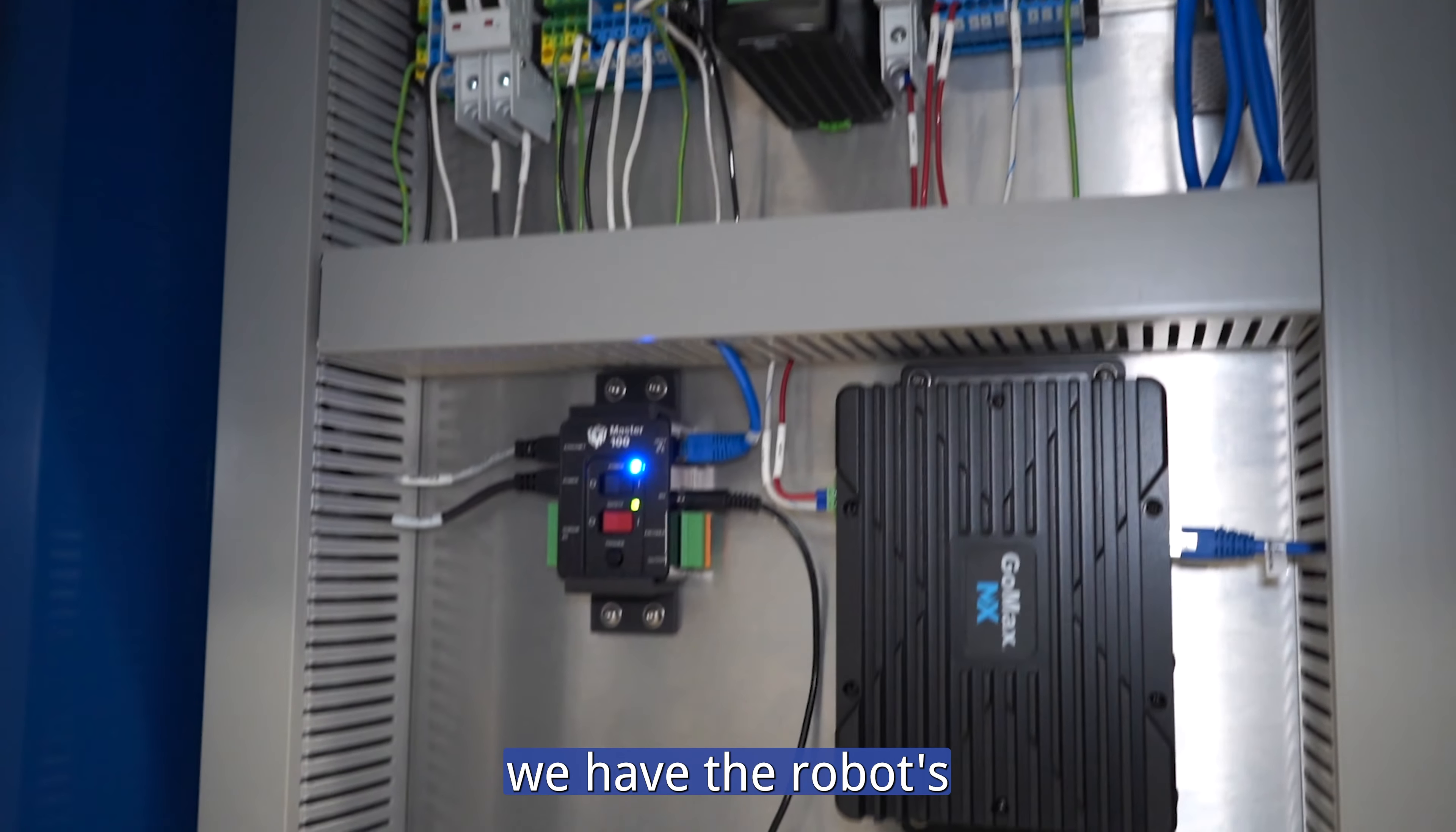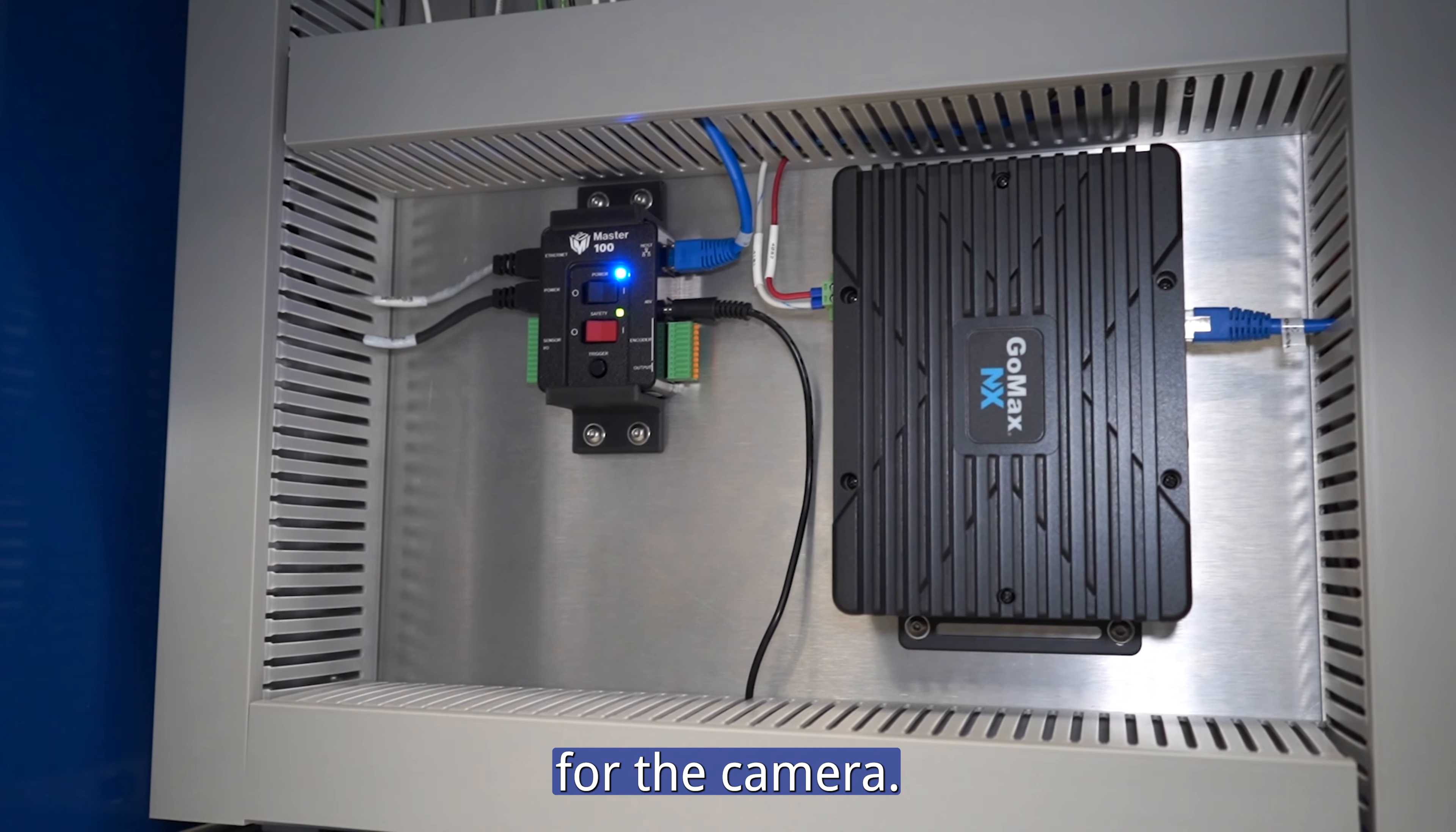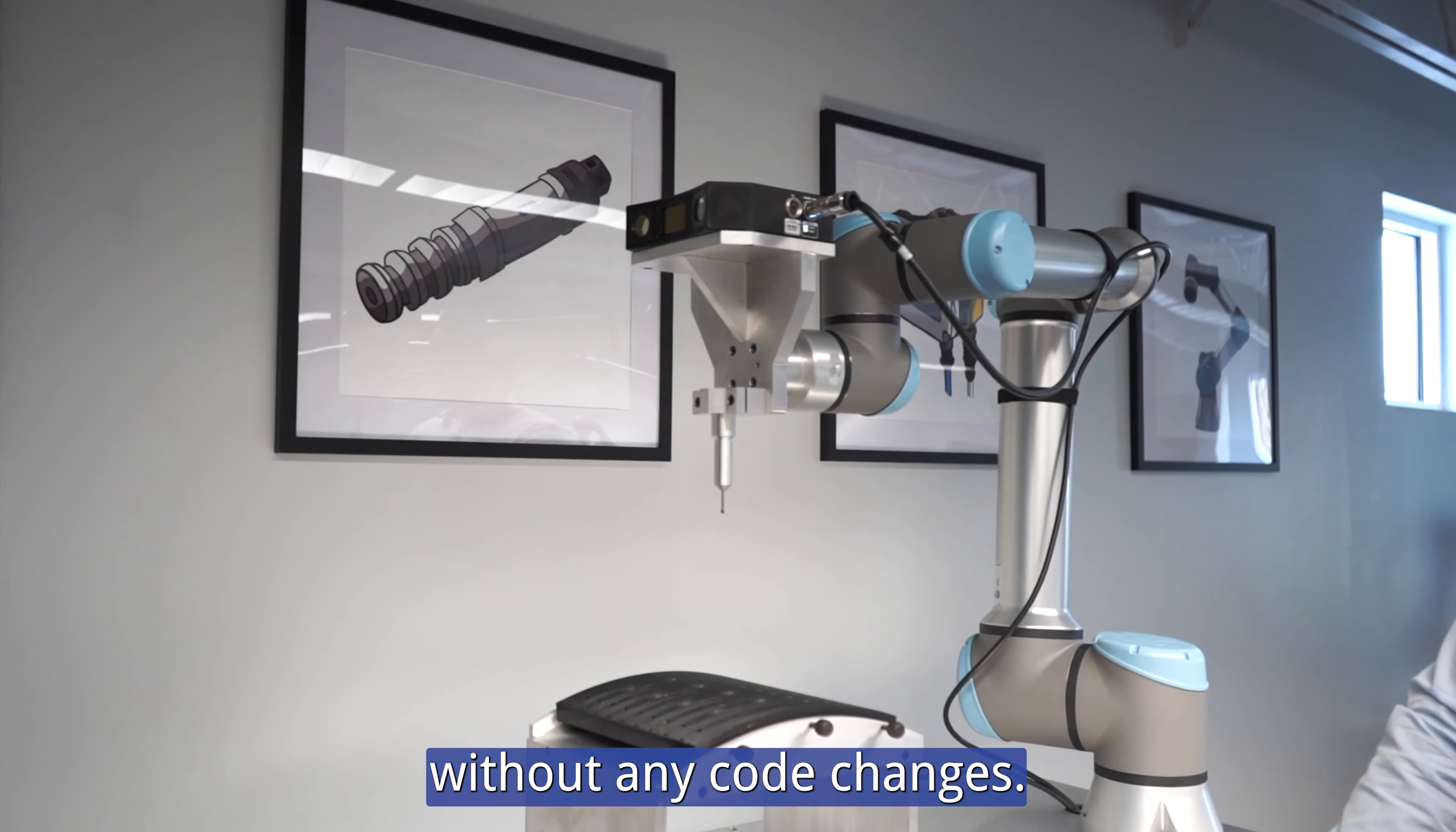On the bottom of the panel, we have the robot's power control on and off switch and the GoMax NX accelerator for the camera. So all in all, this solution was designed to be flexible and easy to operate. You could take this part and rotate it in any orientation and the program would run without any code changes.